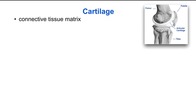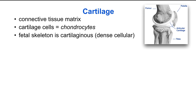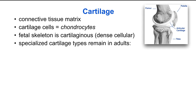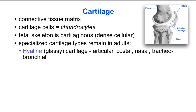Cartilage consists of a connective tissue matrix, primarily comprised of type 2 collagen and cartilage cells called chondrocytes. The fetal skeleton is cartilaginous — a dense cellular cartilage — and only specialized cartilage subtypes remain in adults. These include hyaline or glassy cartilage found in the articulating joints, as well as the costal (ribs), nasal (nose),